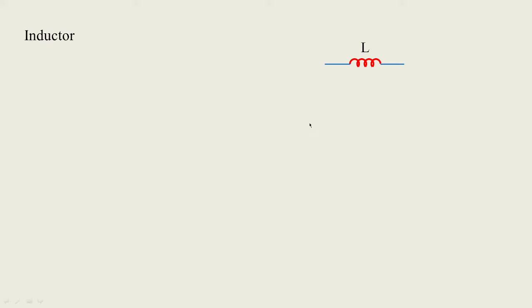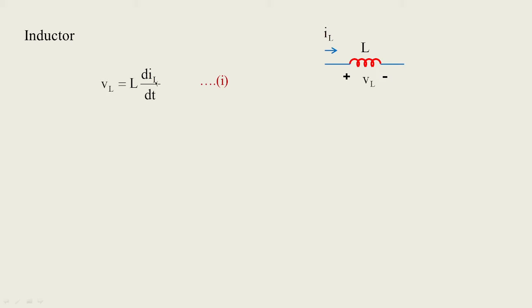Now let us look at the inductor. We know that when current flows through an inductor, the voltage is developed across it according to Faraday's law: vL = L · di/dt. Here di refers to the inductor current flowing through it, so we write vL = L · diL/dt. Mathematically, the current can be obtained as iL = (1/L) ∫ vL dt.